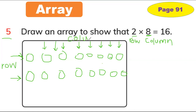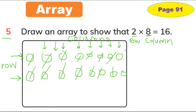How many circles all together? It's 16. When you count them: one, two, three, four, five, six, seven, eight, nine, ten, eleven, 12, 13, 14, 15, and 16. So our array is perfect. In this way you can make an array with any object you can draw. Thank you so much guys for watching, have a good day!